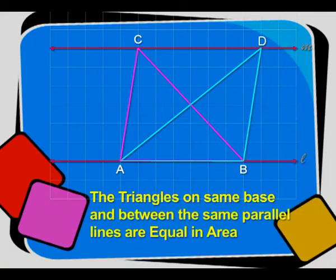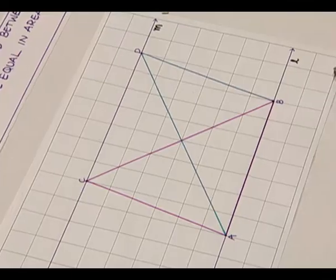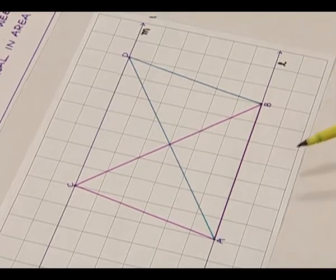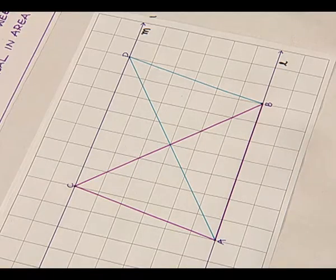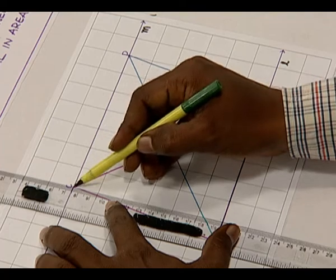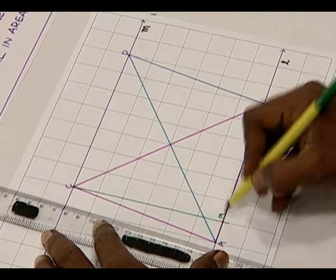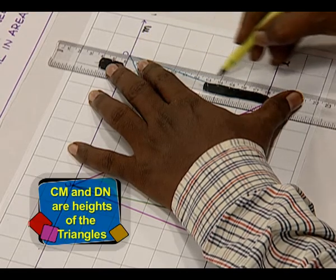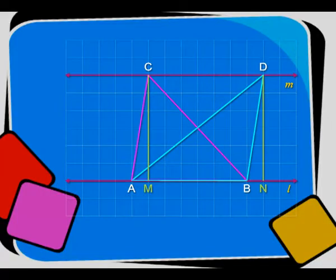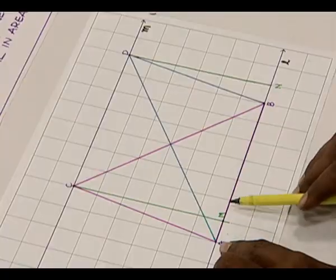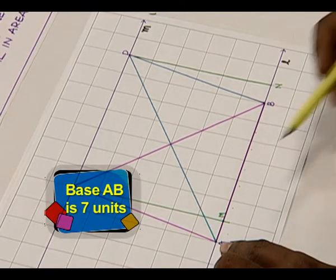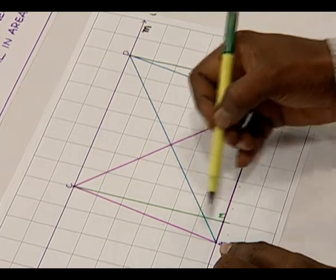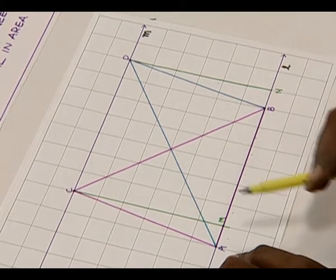So here we verified that the triangles on the same base and between the same parallel lines are equal in area. Now we verify this result by formula method. These two triangles are in between two parallel lines, which means the height of these two triangles are equal. The base AB is 7 units and the height is 6 units, and it is the same for triangle ABC and also for triangle ABD.